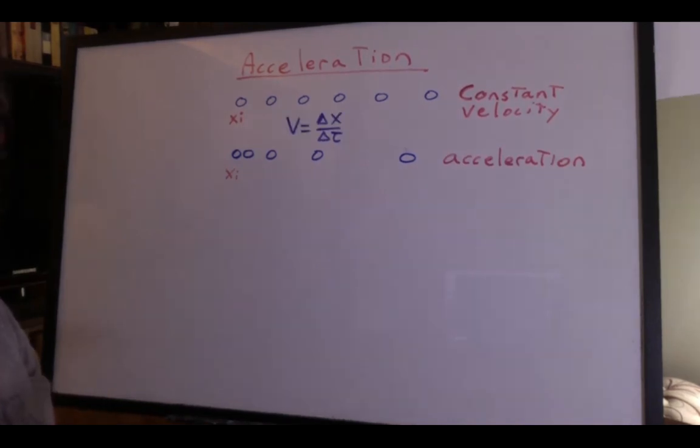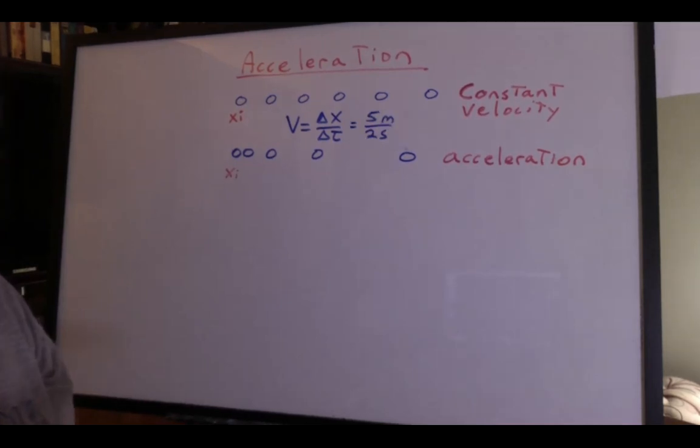I'm sure you've learned that velocity is the change in position over change in time. As an example, we could say five meters in two seconds, which would give us two and a half meters per second.